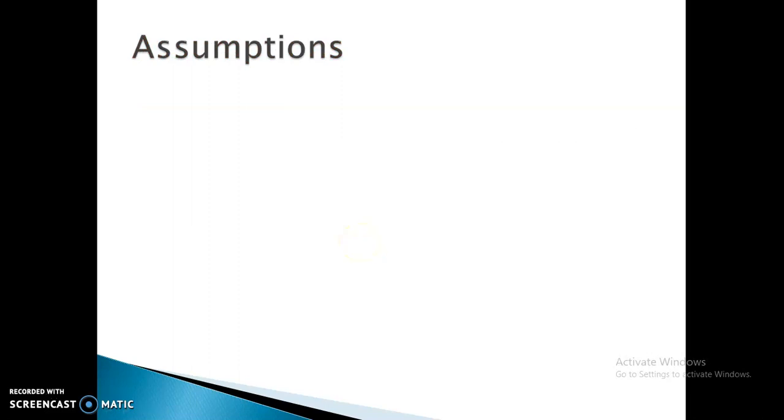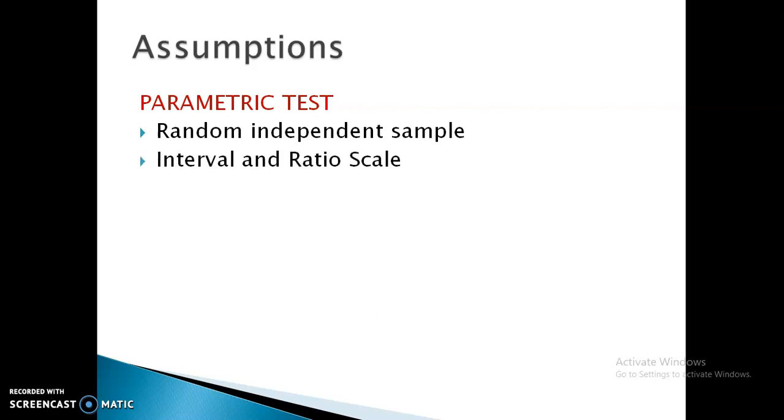Now let's see some assumptions when it comes to parametric test. The first thing is that we need to have random independent sample. The data what we collect through the primary data collection process should be on interval and ratio scales. The data has to be normally distributed.